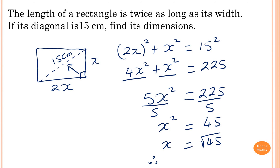Because the answer doesn't specify whether to round to 1 or 2 decimal places, I'll give the answer correct to 2 decimal places. So x equals 6.71 centimeters.